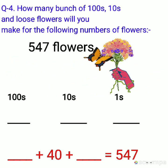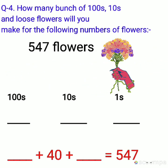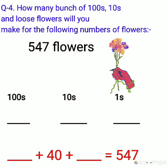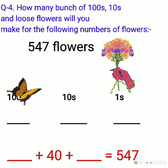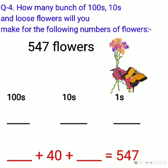Or in other form, how can you write this number? Dash plus dash plus dash equals 547 flowers. You have to fill this.